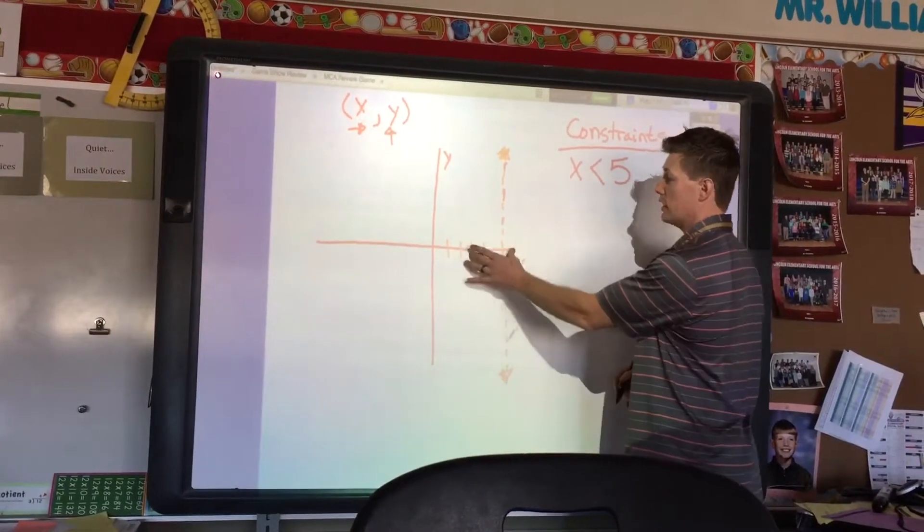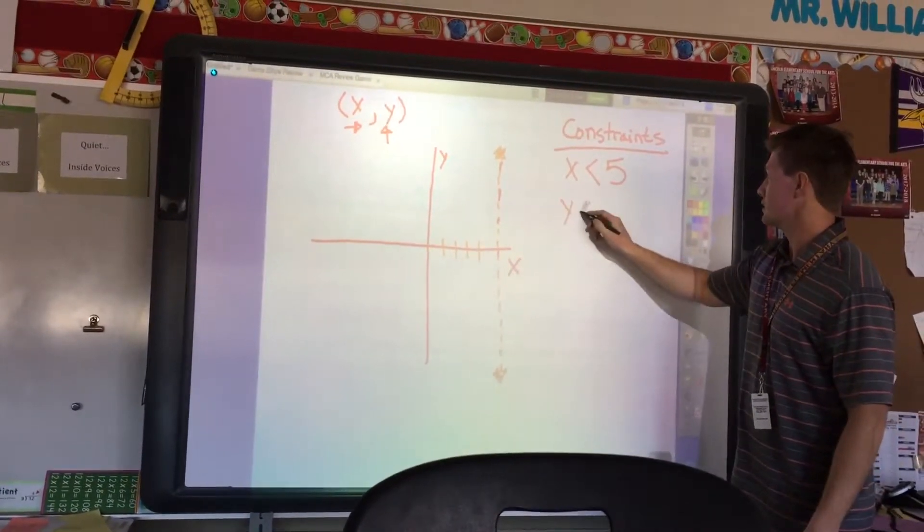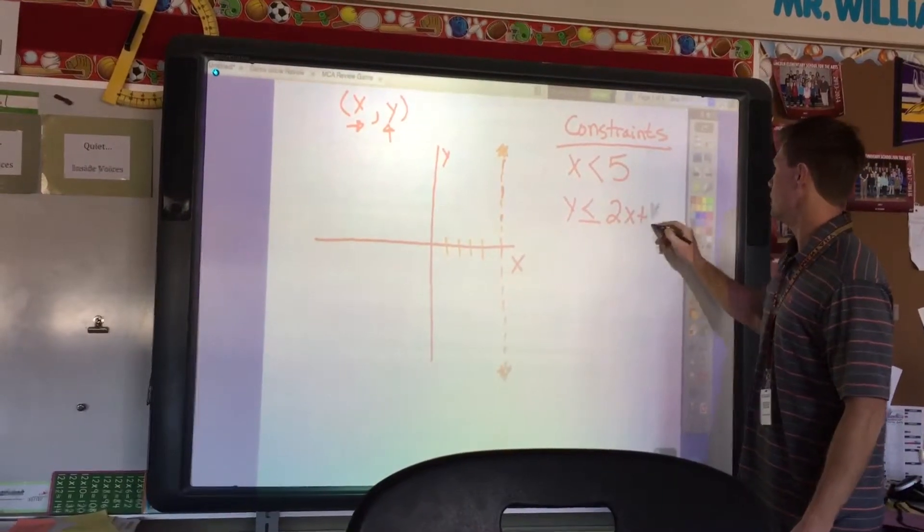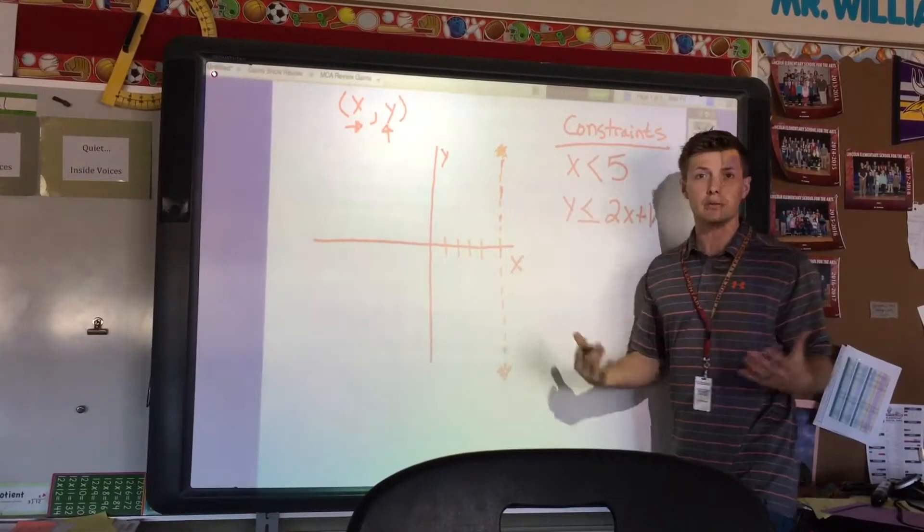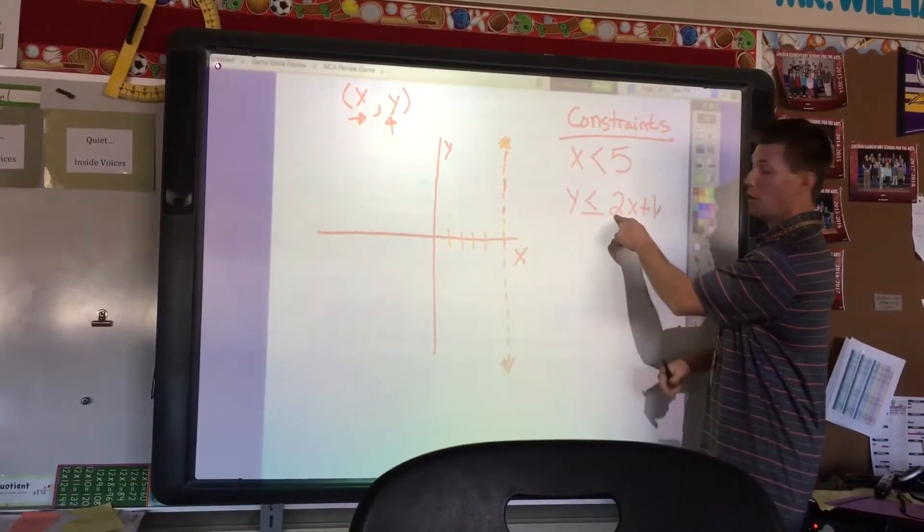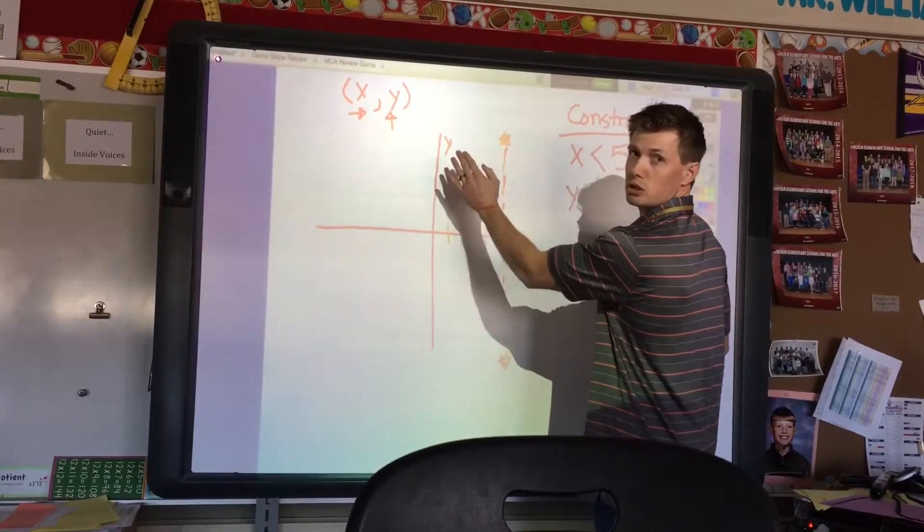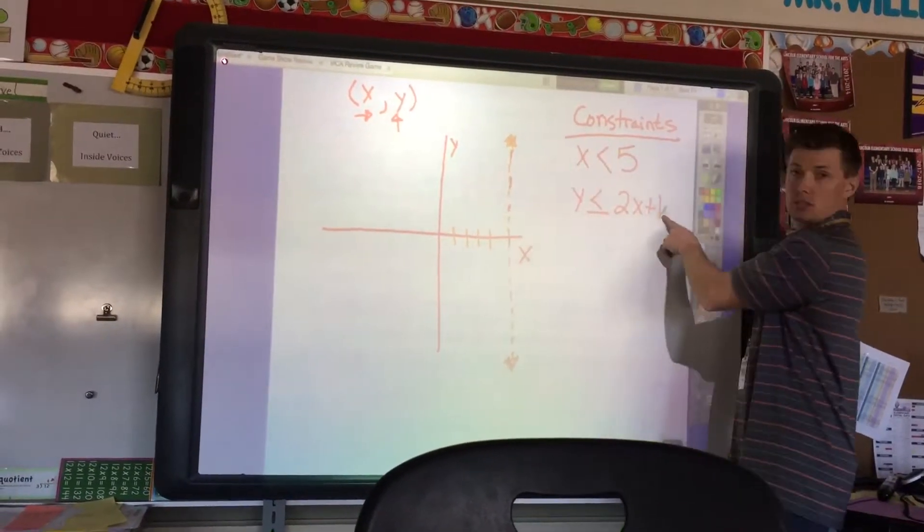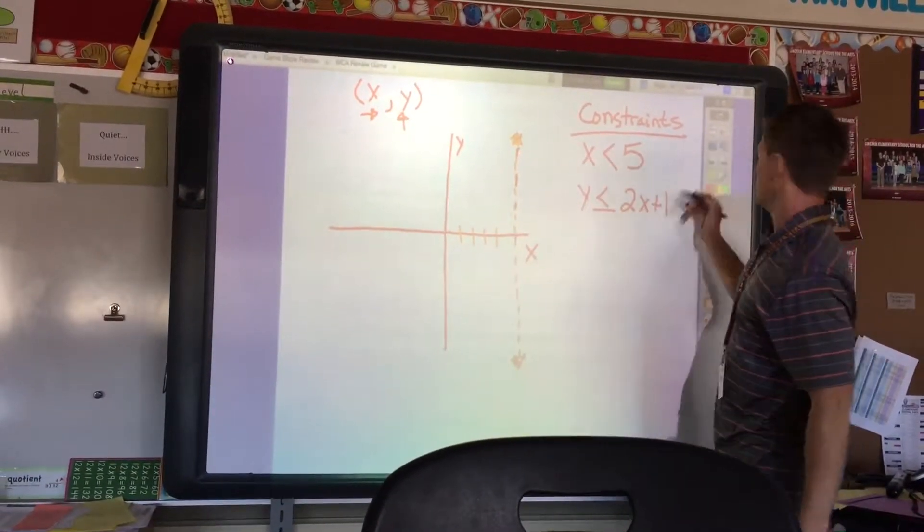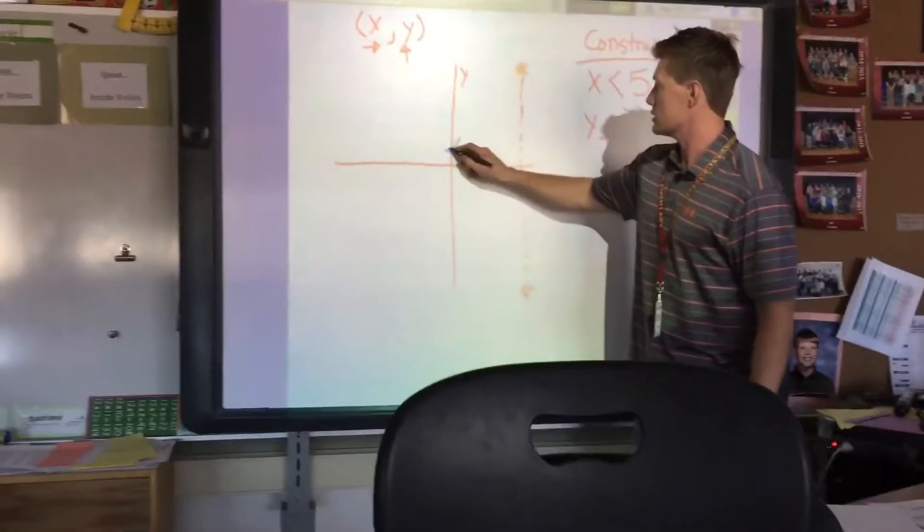Next, if we're going to graph the next constraint, y is less than or equal to 2x plus 1. Now, this is where it gets a little tricky. We have to understand what is our slope and what is our y-intercept. Knowing that this is our slope 2, we're going to have up 2 over 1. Also, our y-intercept is at 1. So I'm going to plot this using blue. So our y-intercept here is at 1.